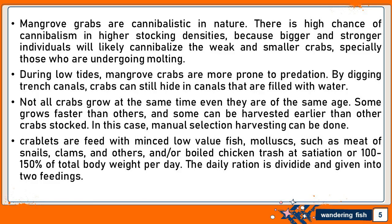Mangrove crabs are cannibalistic in nature. There is a high chance of cannibalism at higher stocking densities, because bigger and stronger individuals will likely cannibalize the weak and smaller crabs, especially those undergoing molting. During low tides, mangrove crabs are more prone to predation. By digging trench canals, crabs can still hide in canals filled with water. Not all crabs grow at the same time even if they are of the same age. Some grow faster than others, and manual selective harvesting can be done.